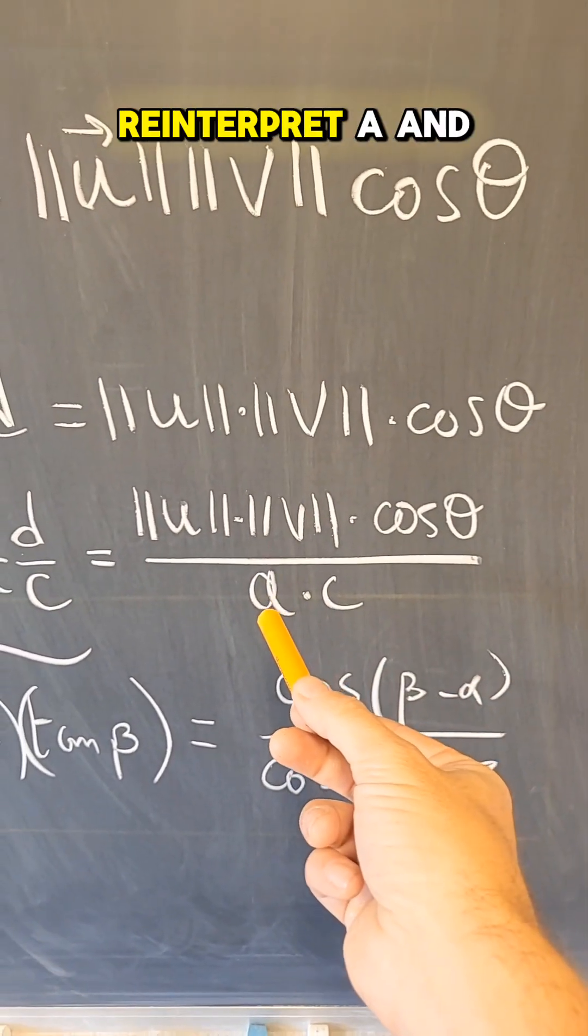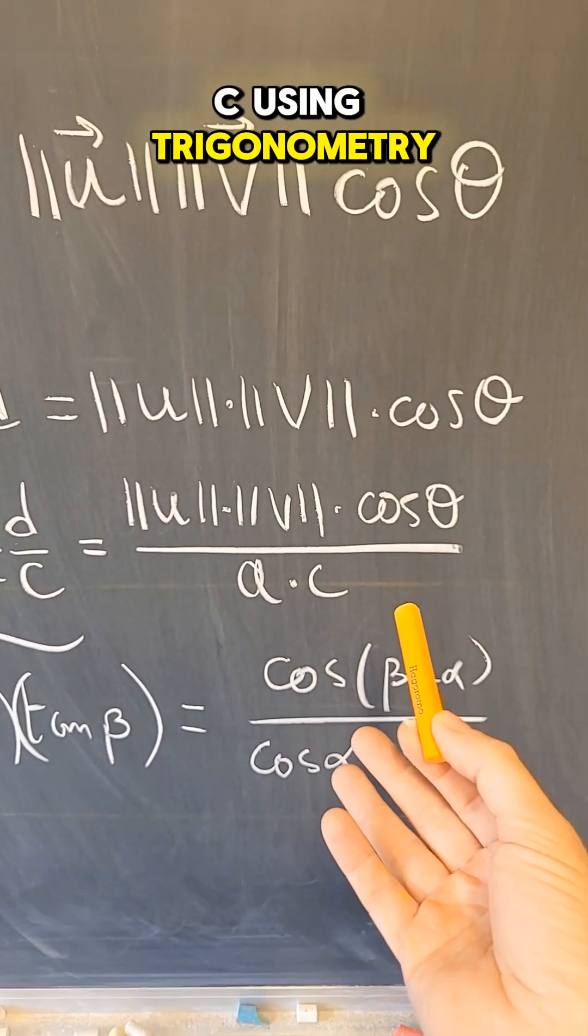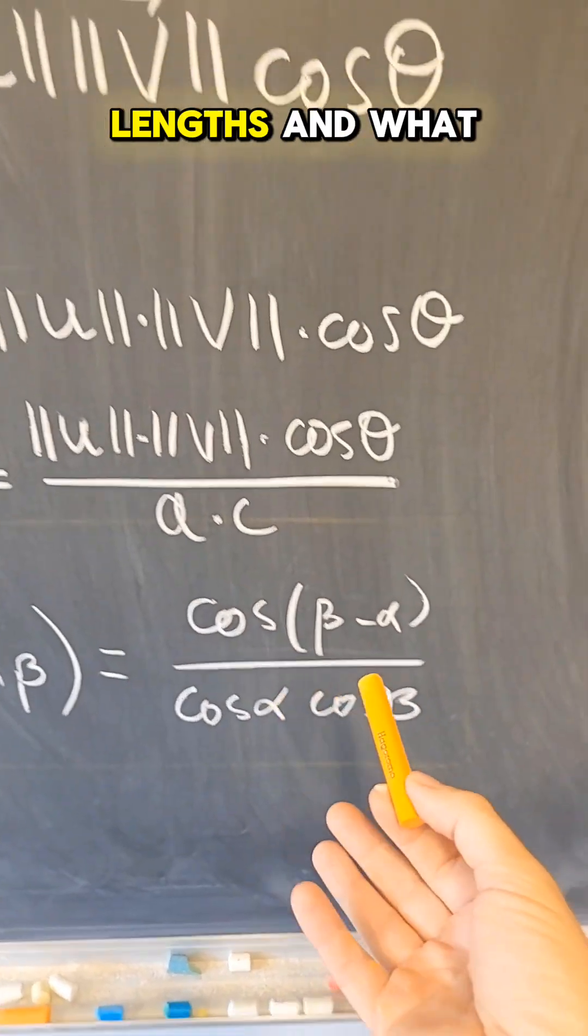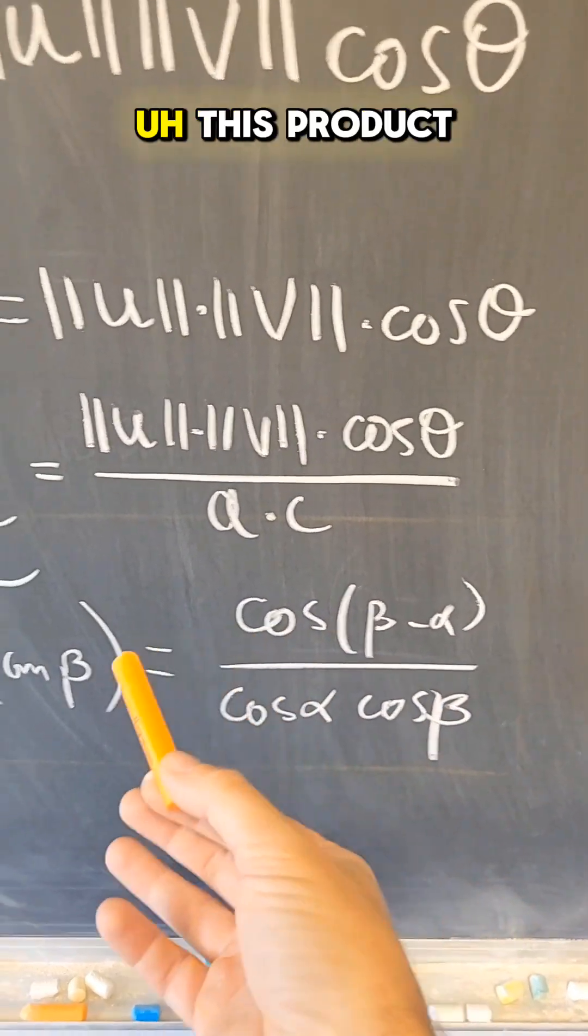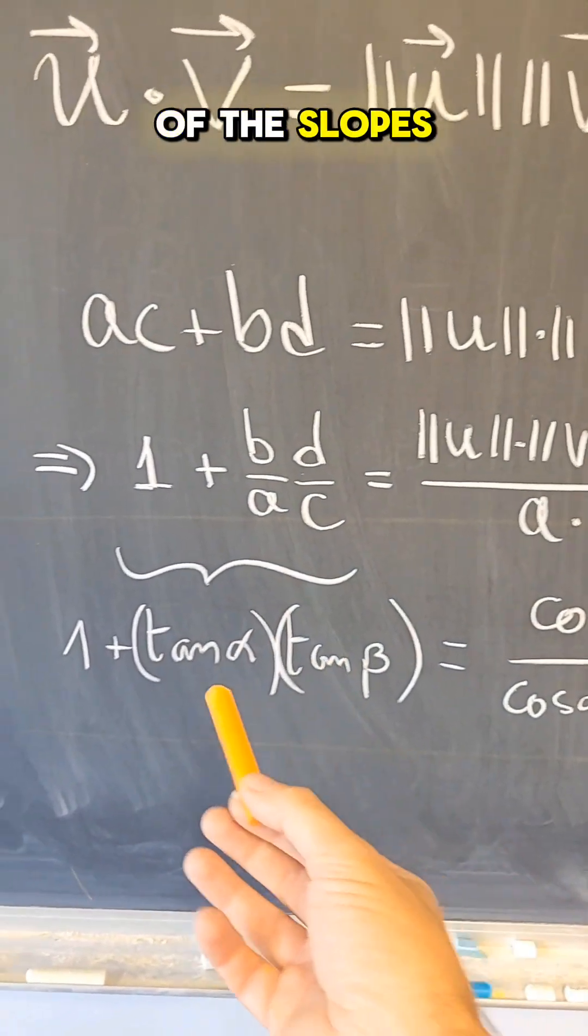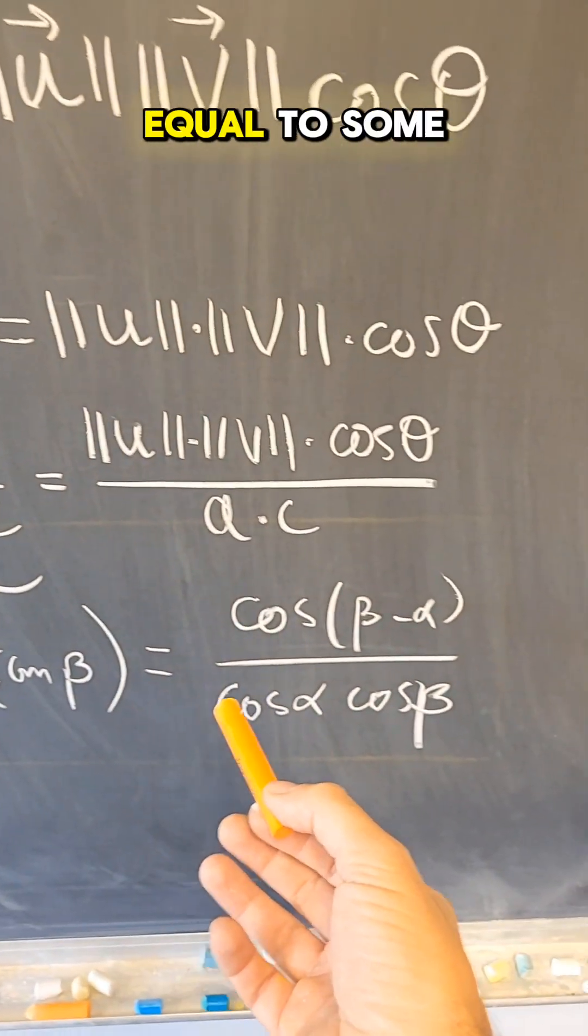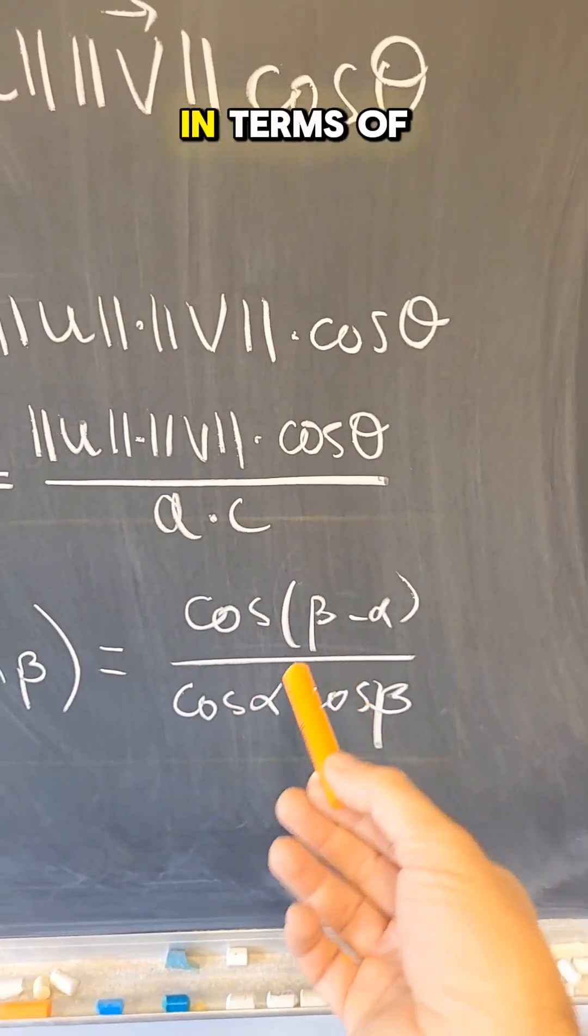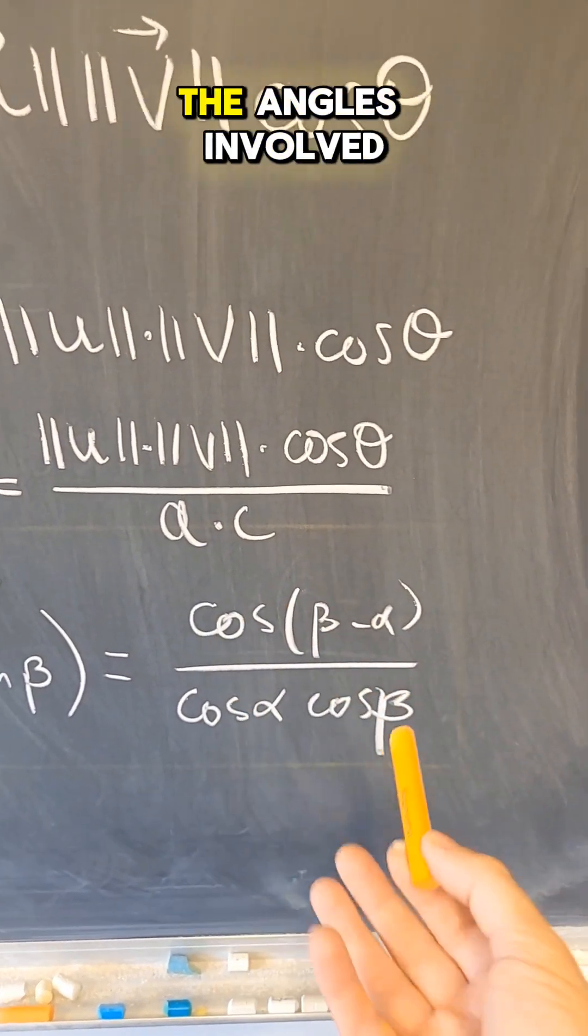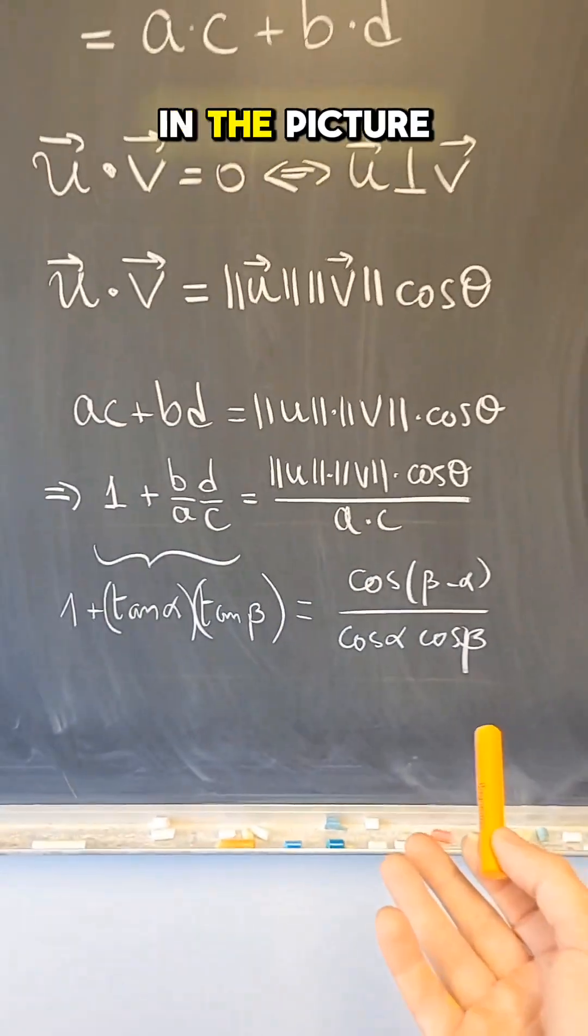So 1 plus the product of the slopes is equal to, and on this side, I can reinterpret a and c using trigonometry, cancel out the lengths. And what I get is that this product of the slopes plus 1 is equal to some term in terms of the cosines of the angles involved in the picture.